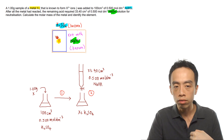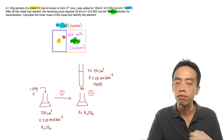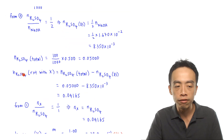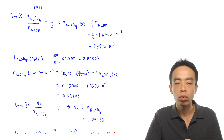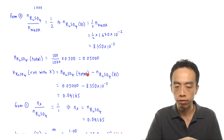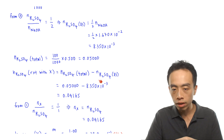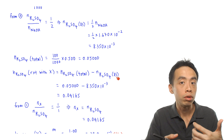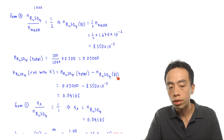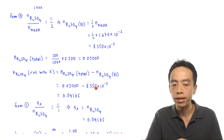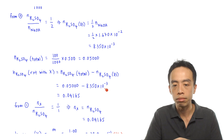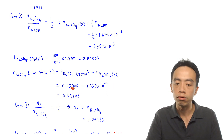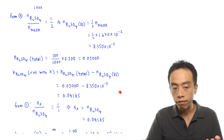The moles of H₂SO₄ that reacted with X = total moles of H₂SO₄ minus the moles of H₂SO₄ in excess that reacted with NaOH = 0.05 − 8.350 × 10⁻³ = 0.04165 mol.